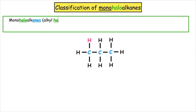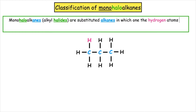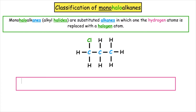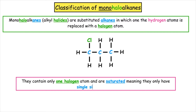Monohaloalkanes, also known as alkyl halides, are substituted alkanes in which one of the hydrogen atoms is replaced with a halogen atom. They contain only one halogen atom and are saturated, meaning that they only have single sigma bonds between the carbon atoms.